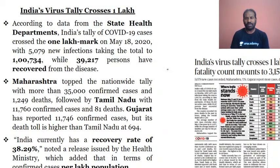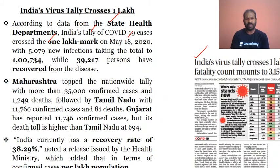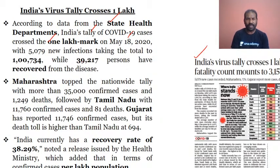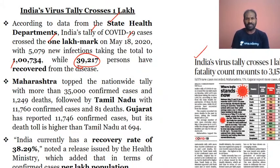Today's newspaper front page covers India's virus tally of over one lakh, with a fatality count of 3,157. The state health departments reported India's tally crossing one lakh on May 18th. This is a cause of concern as the number of infections are definitely increasing. There is some respite as 39,217 people have recovered from the disease, but infected cases are still increasing day by day.